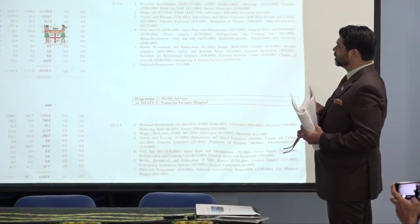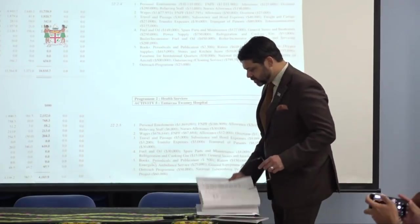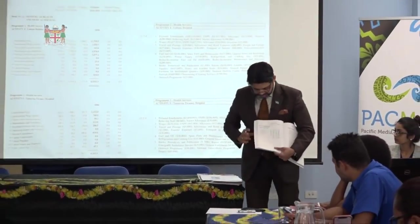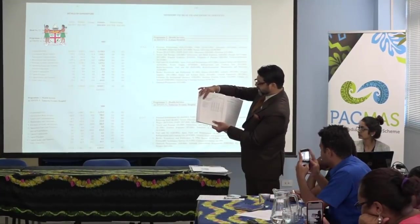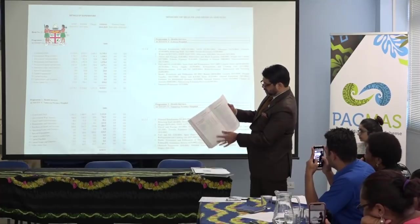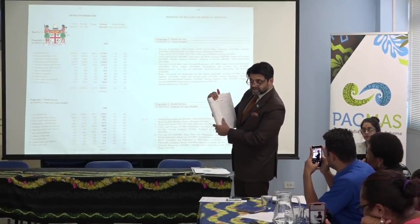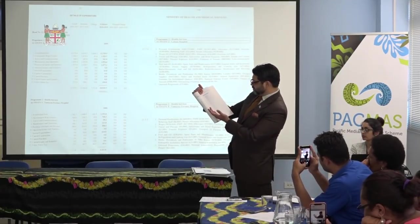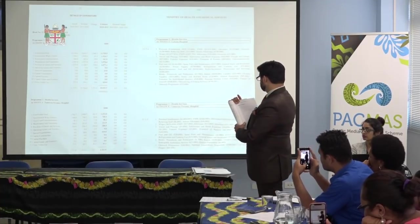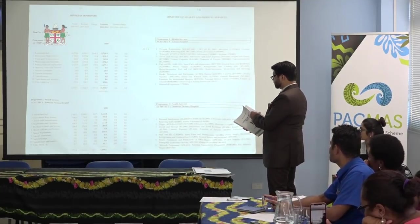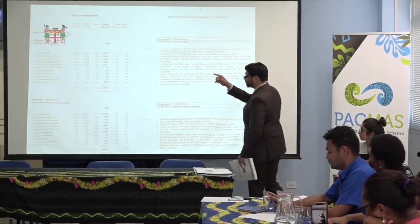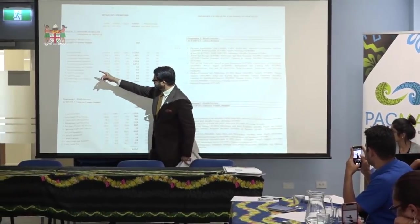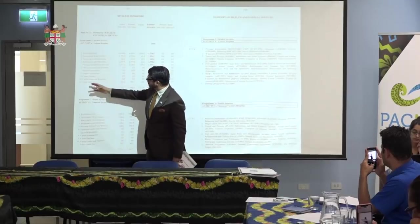Within the Ministry of Health, you have different programs. Program 1 is Policy Administration, Activity 1 is General Administration — that's like the head office. Program 2, Activity 4 tells you exactly how much money we are spending in Lautoka Hospital. These are called SEGs — SEG 1 through SEG 13. SEG 1 and SEG 2 are your remuneration costs — salaries, personal emoluments, wages, FNPF, allowances, overtime.